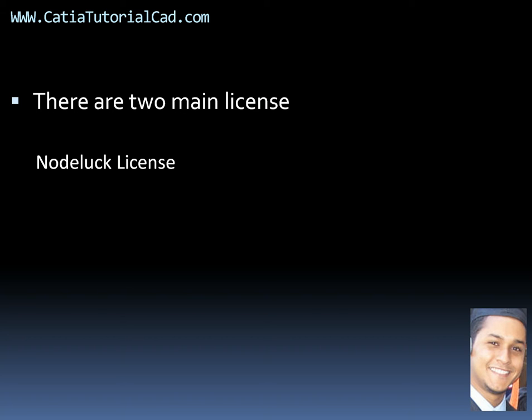Just to remind you — I may have talked about this in another video — when you're requesting a license, normally they will ask you for your target ID. The target ID is a certain number, like an eight-digit number with some letters. Those are like your social security for the machine. You give the target ID to the key center from Dassault Systems and then they will provide you a license based on that machine.